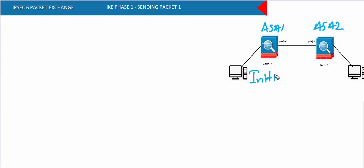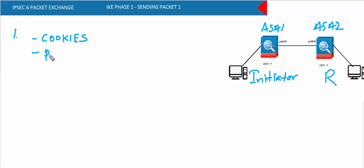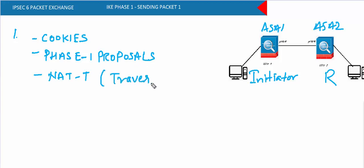In the first packet, what information does the initiator send to the responder? It sends cookies, phase one proposals, NAT-T, and a few more things: DOI (Domain of Interpretation) and Situation.